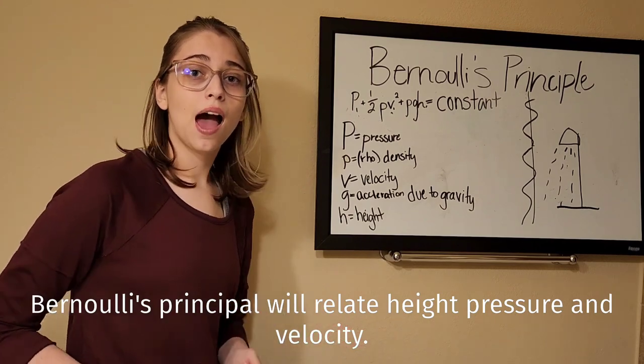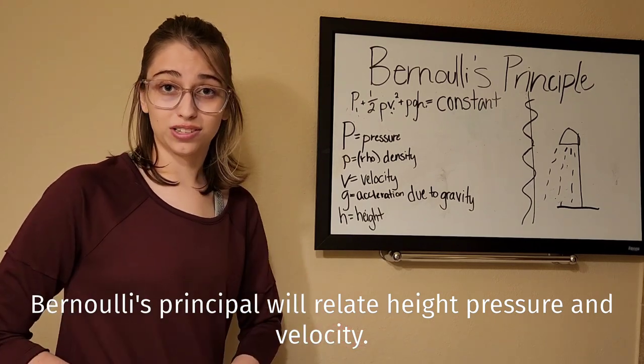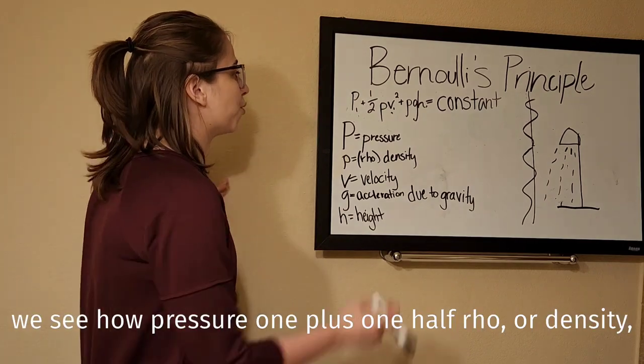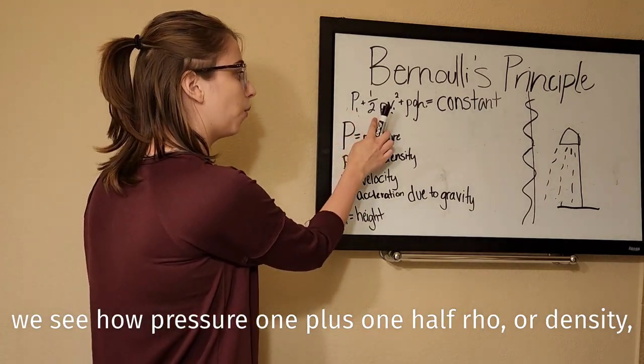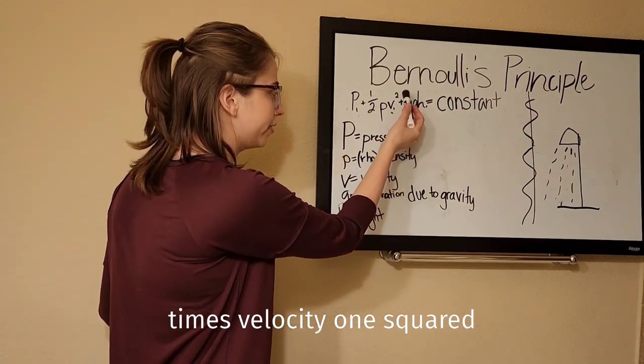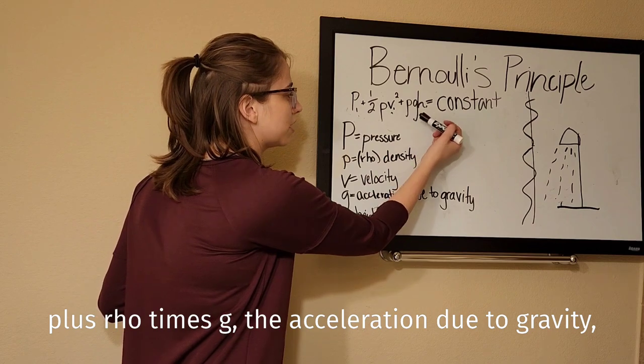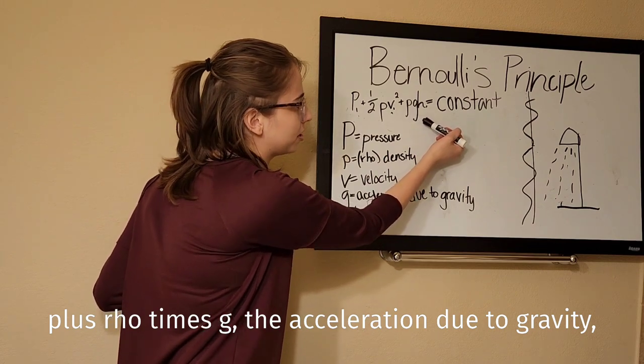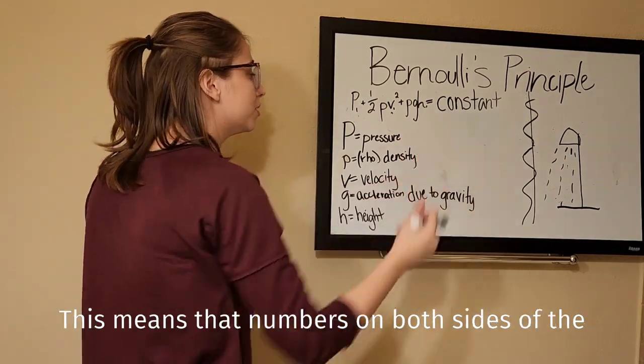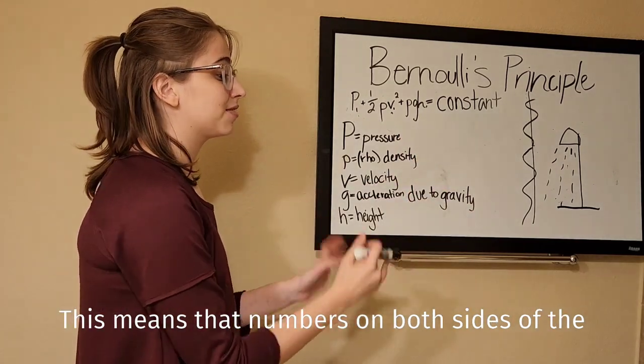Bernoulli's principle will relate height, pressure, and velocity. We can start by looking at Bernoulli's equation in which we see how pressure 1 plus one-half rho, or density, times velocity 1 squared plus rho times g, the acceleration due to gravity, times h, the height, is equal to a constant value. This means that numbers on both sides of the equation must be equal.